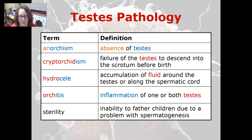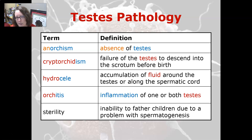Now let's look at some pathologies, first for the testes. Anorchism is the absence of testes. Cryptoorchidism is the failure of the testes to descend into the scrotum before birth. Hydrocele is the accumulation of fluid around the testes or along the spermatic cord. Orchitis is the inflammation of one or both testes. Sterility is the inability to father children due to a problem with spermatogenesis.